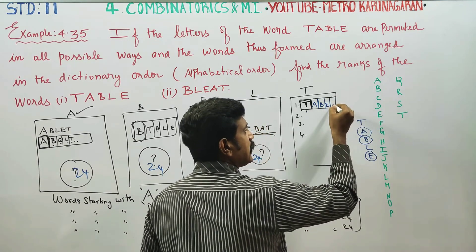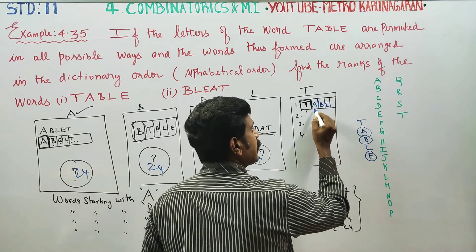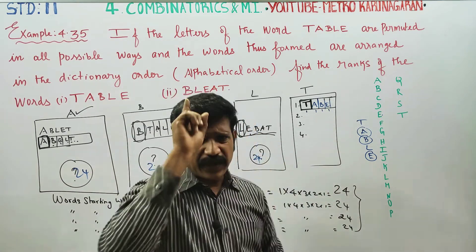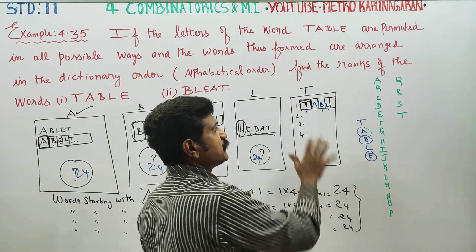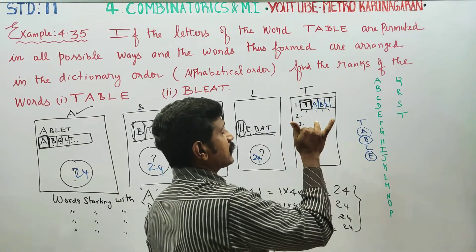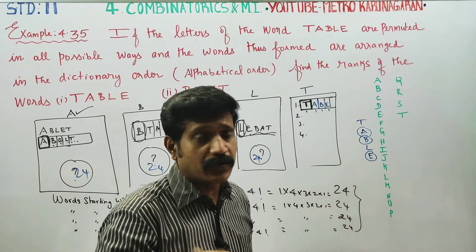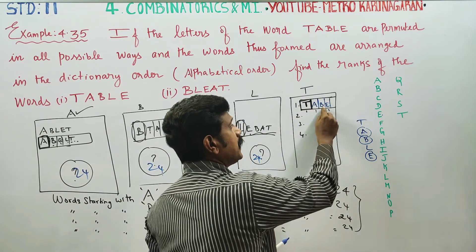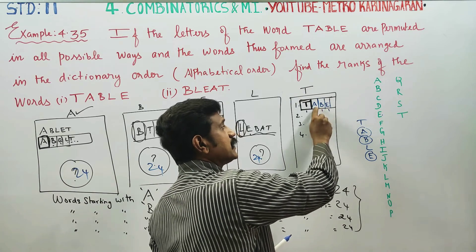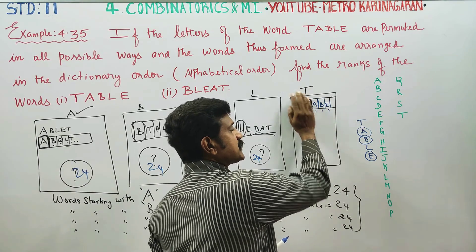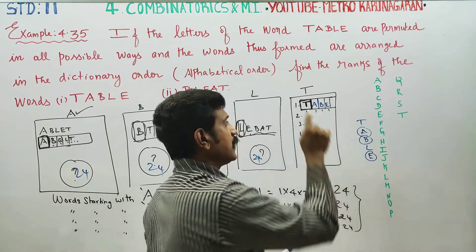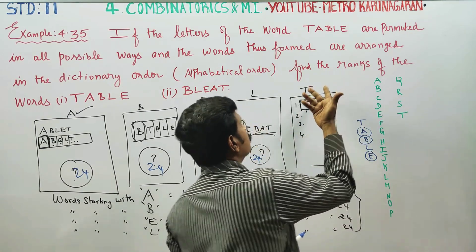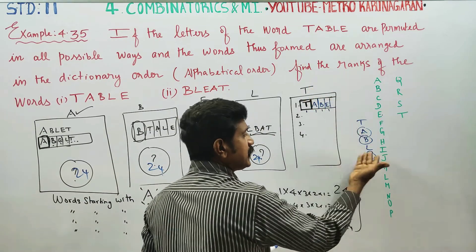E is fixed in one position. T is fixed as the first letter. In alphabetical order for the second place: A is coming. B is not coming. C is not. D is not. E is not coming.